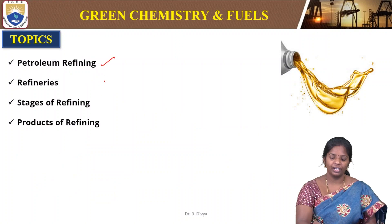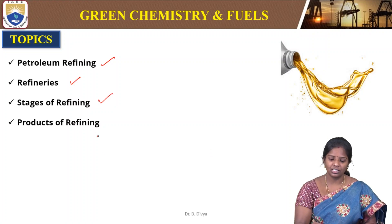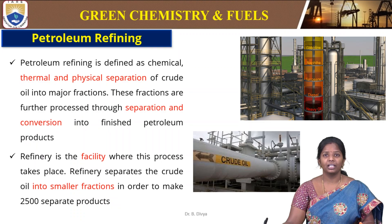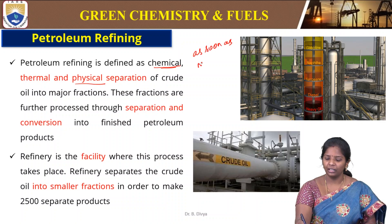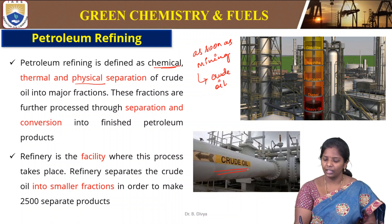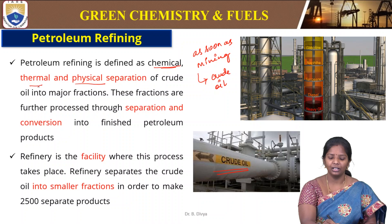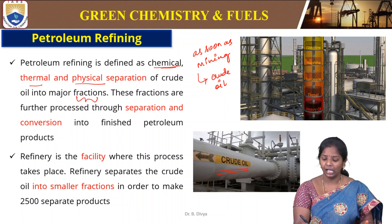The topics are petroleum refining and the refineries. Refineries are the places where we do the refining of petroleum, through different stages of refining, and ultimately the products that we obtain during refining. Petroleum refining is defined as the chemical, thermal and physical separation of crude oil. As soon as mining, we get crude oil, which is refined to get different products — fractions that are reprocessed to get ultimate products for commercial usage.